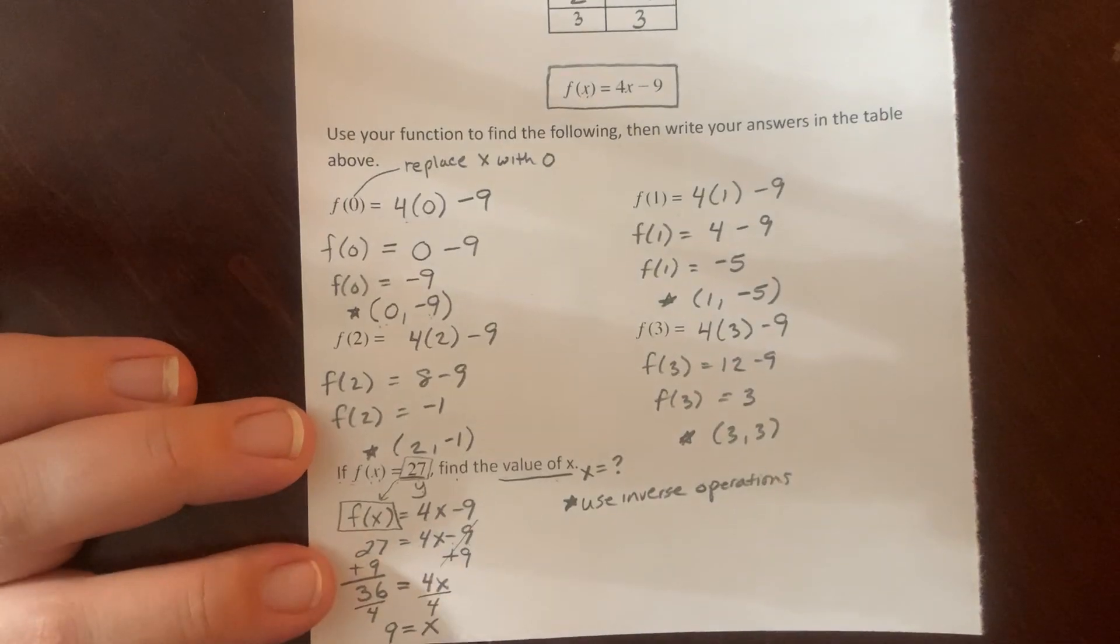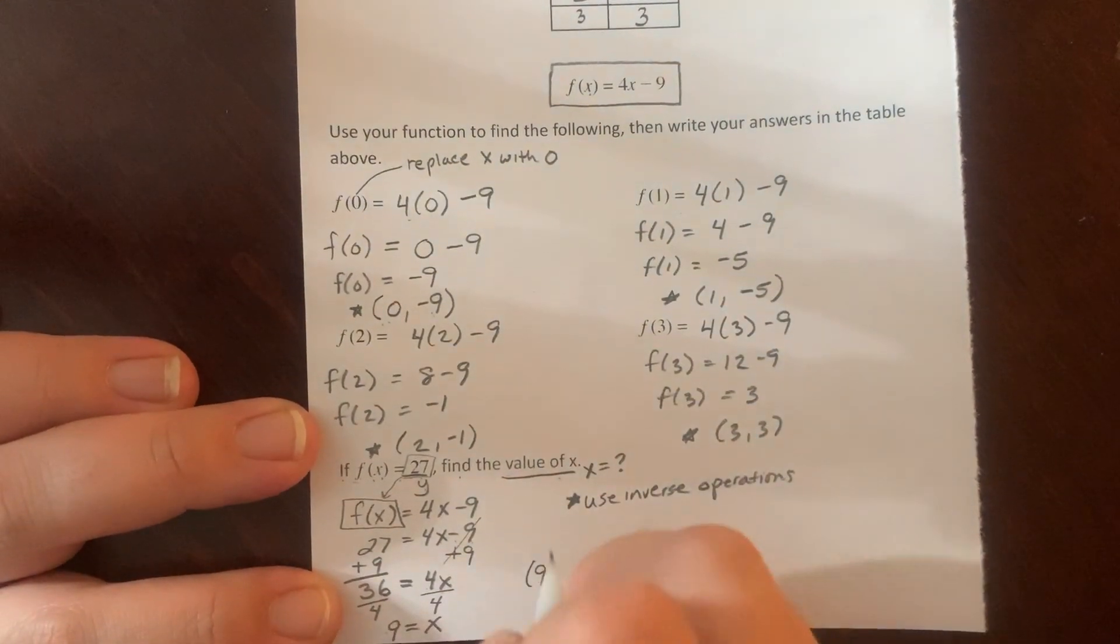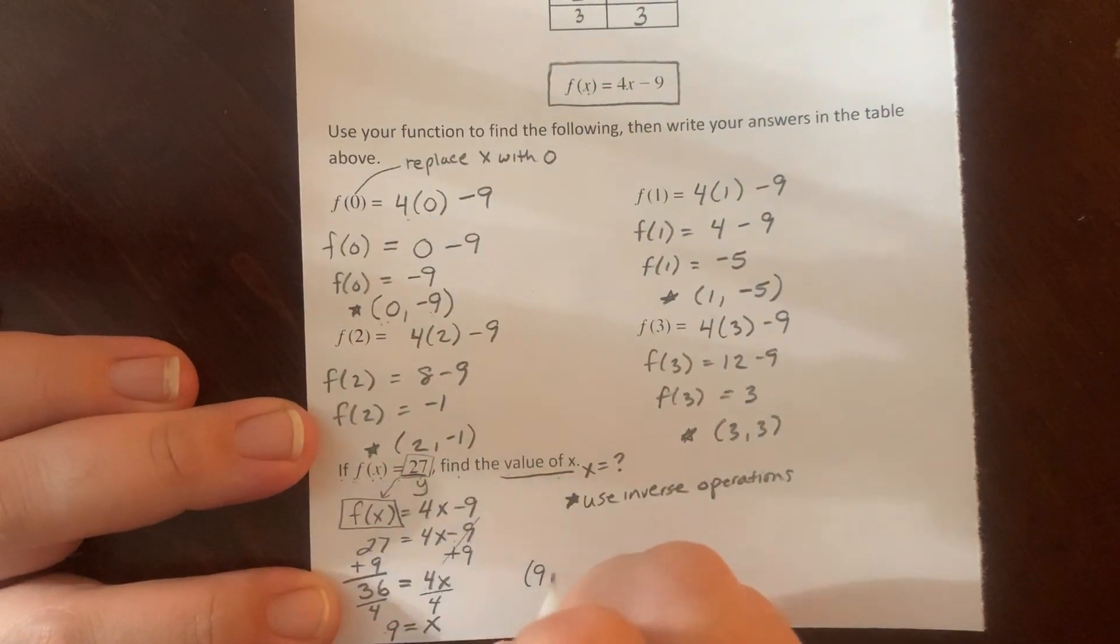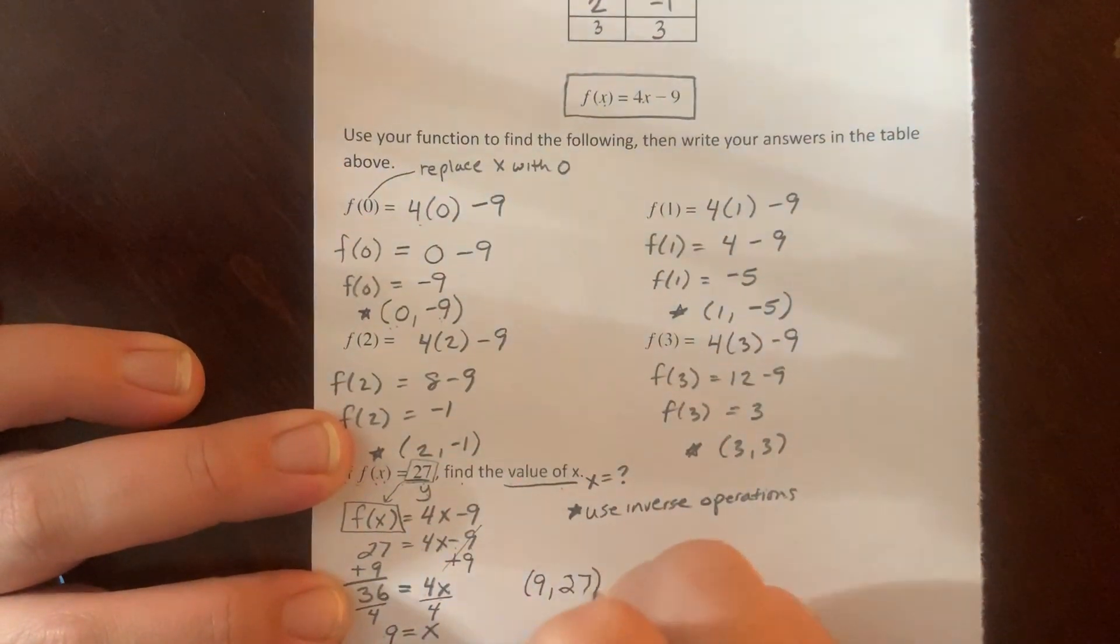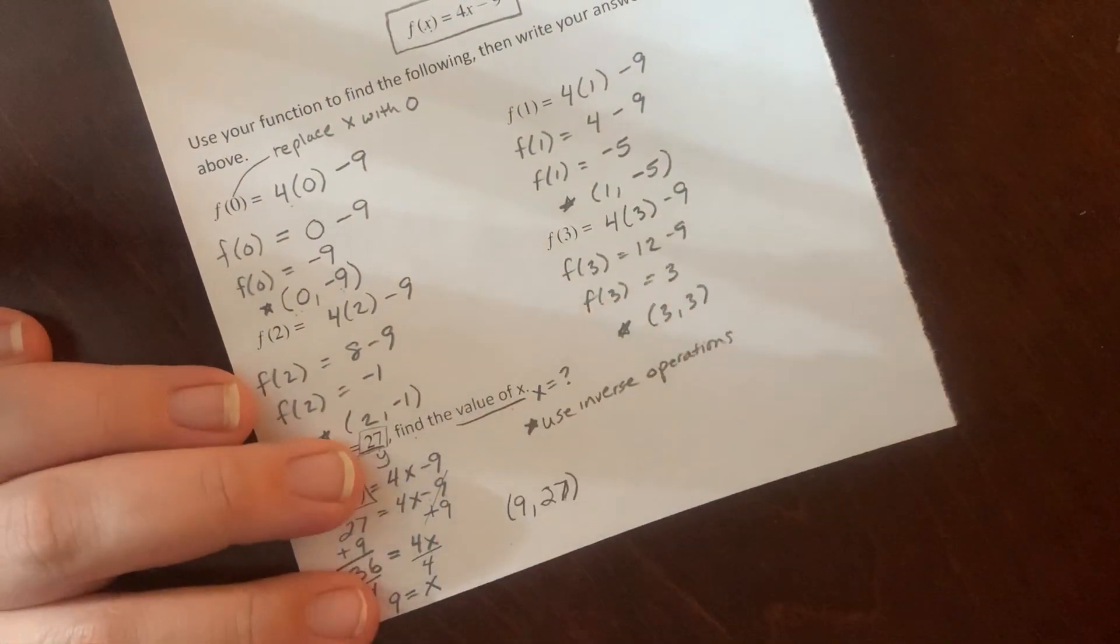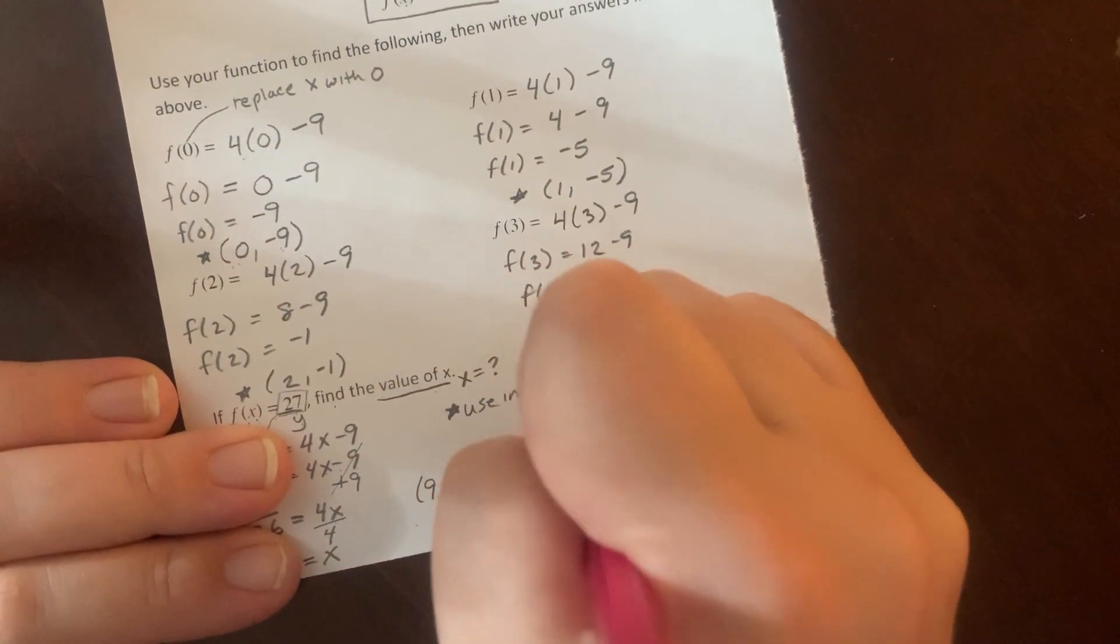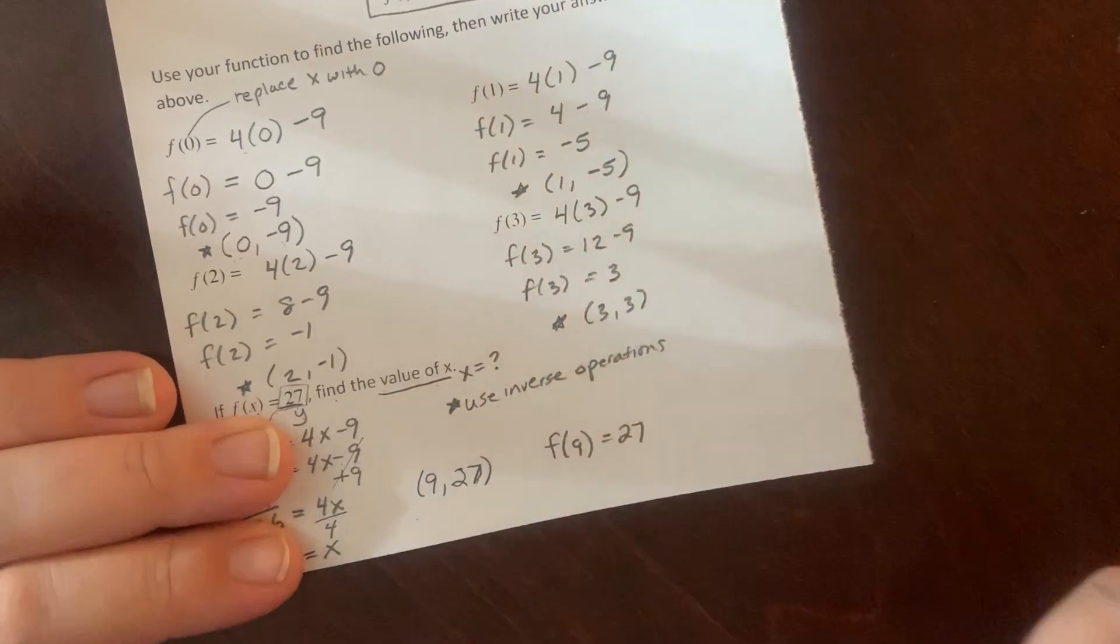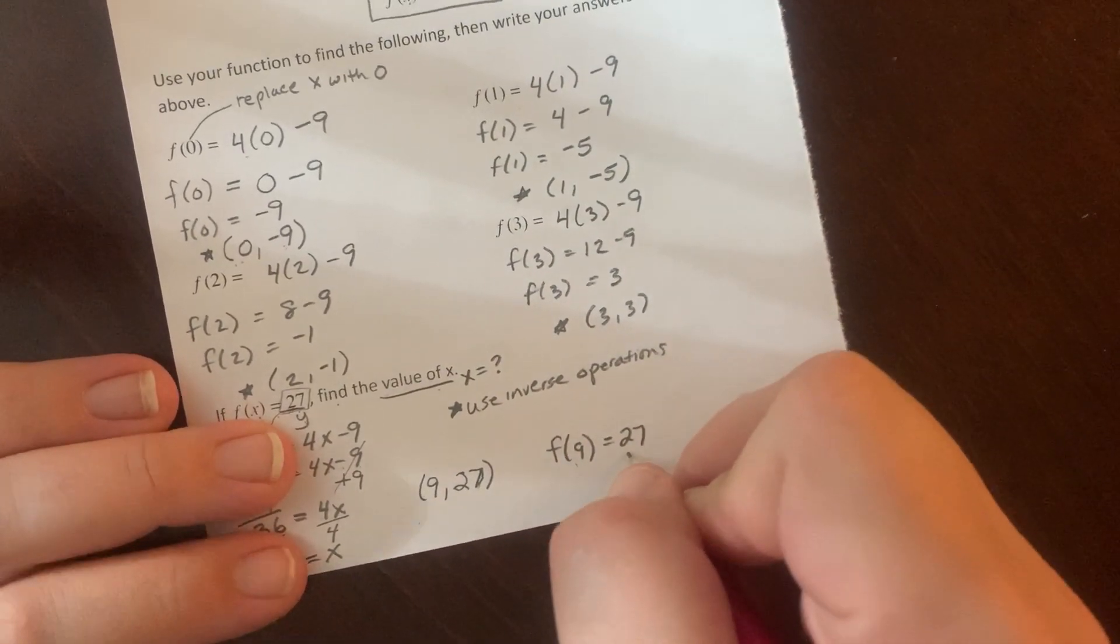So what does that tell me? That tells me that when my input is 9, my X is 9, my output is 27. So my ordered pair would be 9 comma 27. I can also write that using the notation. I can say F of 9 equals 27. So that's another way of writing the same information. The input of 9 gave me the output of 27.